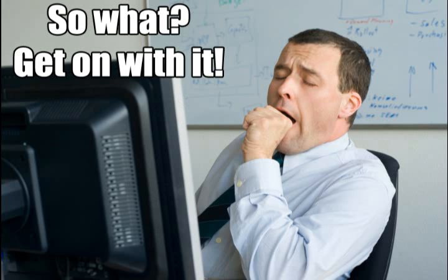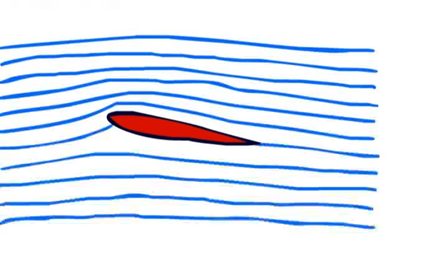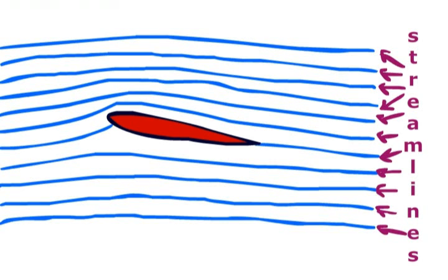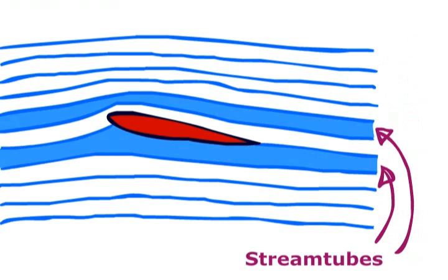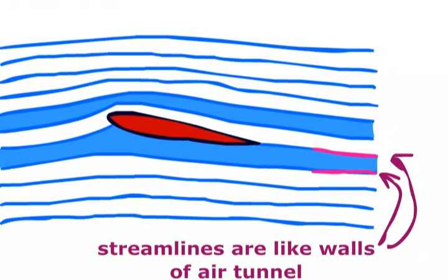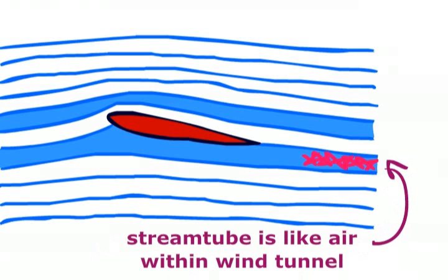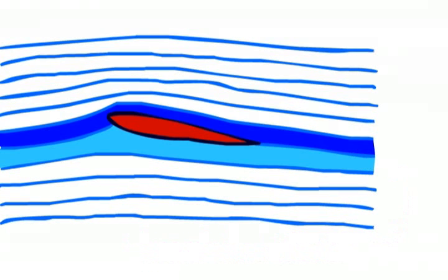That's all well and good, but what has all that got to do with a wing? Well, here is a wing, and here are the streamlines around the wing. Within these streamlines are stream tubes. You can think of these streamlines and stream tubes as being little wind tunnels like before, as air cannot move from one stream tube into another. These are the two stream tubes we are interested in, the upper and the lower.